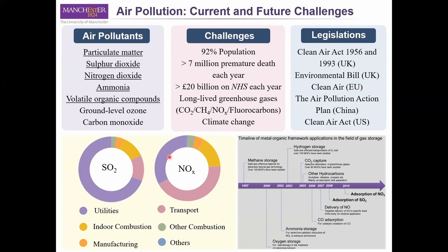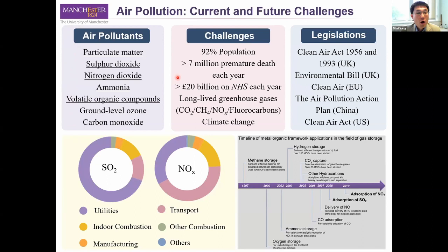Thank you, Martin. I'm going to talk about the current and future challenges of air pollution and how MOF chemistry may contribute to a solution. Air pollution comes from many sources. There are over 187 different types of air pollutants, and the top five highlighted here are the most significant in the UK. According to the World Health Organization, over 92% of the population on Earth is living in polluted air, and air pollutants cause over 7 million premature deaths each year. Many of these pollutants are long-lived greenhouse gases contributing to climate change, decline of biodiversity, and other environmental problems. Many countries, including the UK, EU, China and the US, have adopted legislation to fight air pollution.